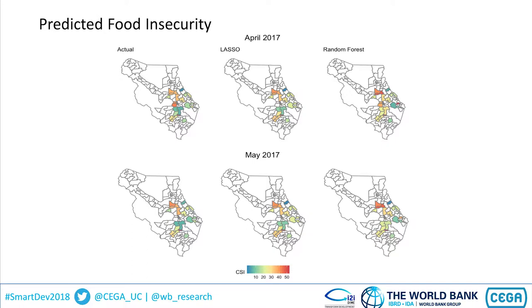What we want to do next — and what we're in discussion with both the Malawian government and researchers on doing — is to layer this over both geospatial data and CDR data, which we are securing access to, in order to extrapolate and make out-of-sample predictions for the region and ideally at some point for the entire country of Malawi.